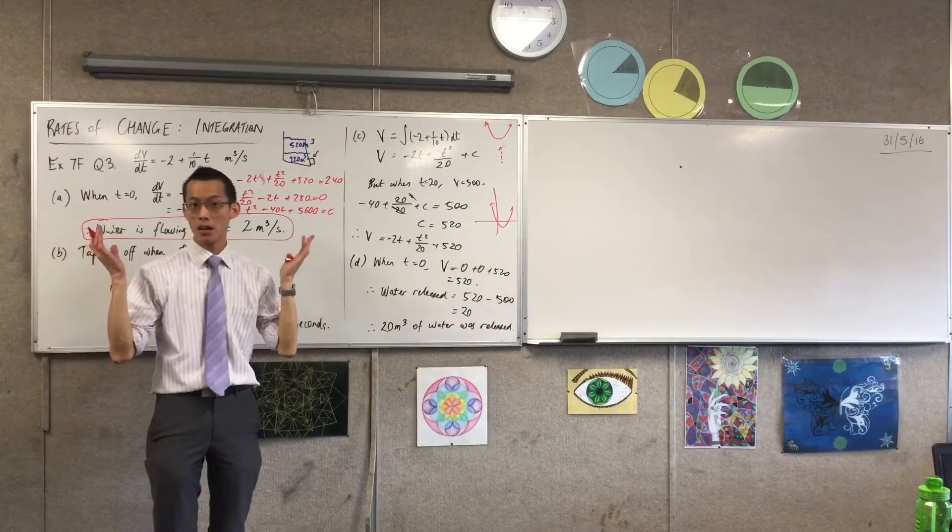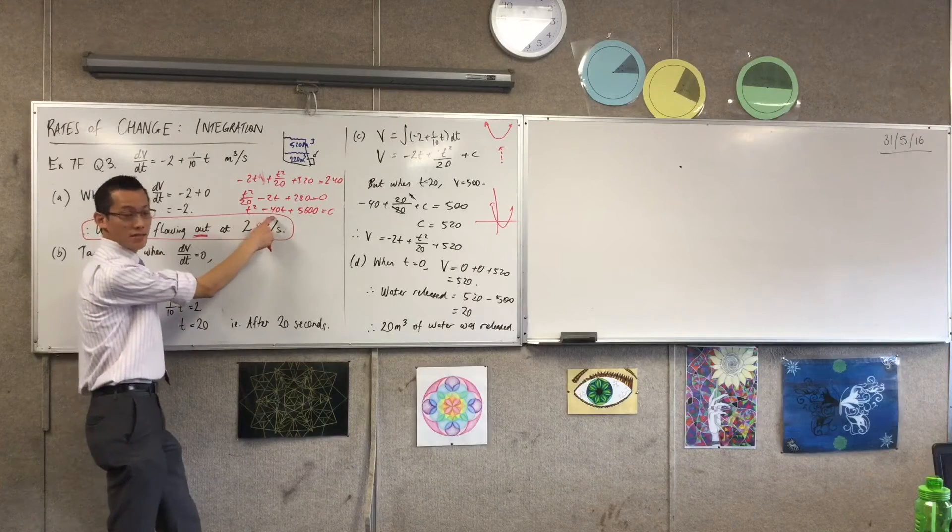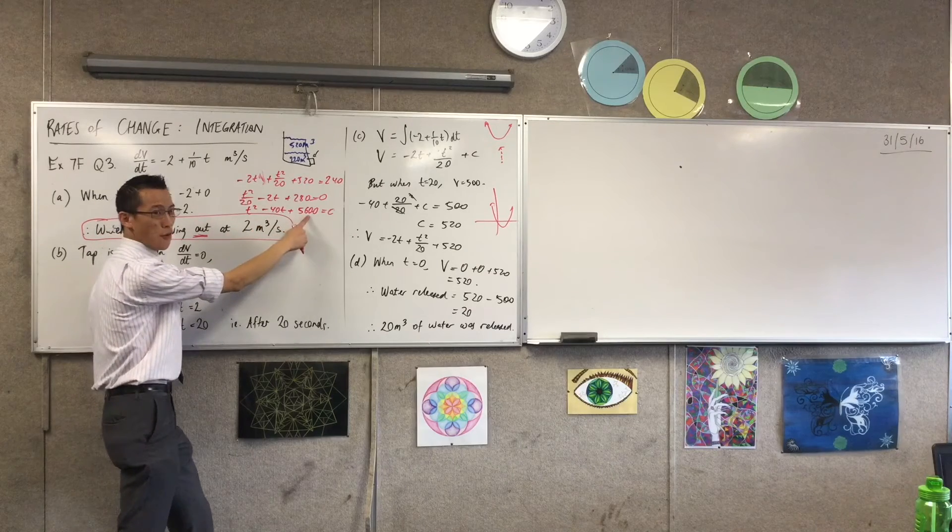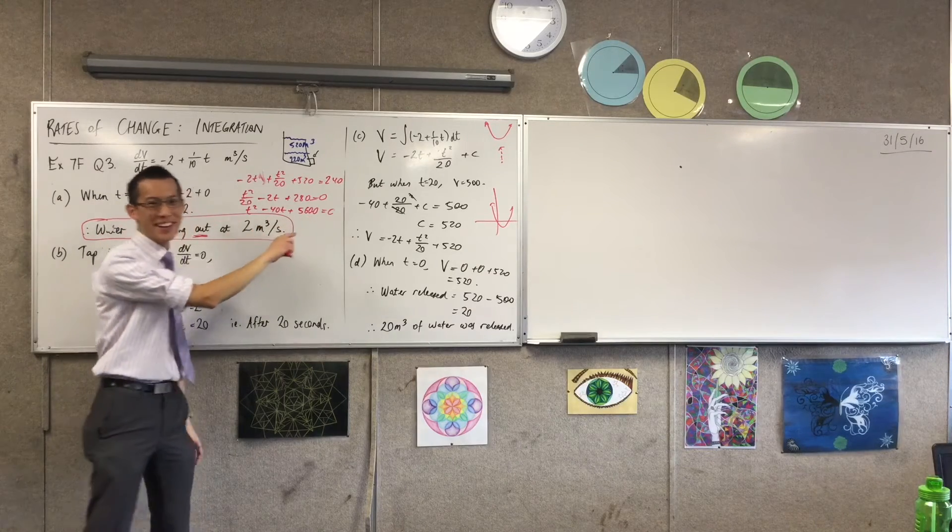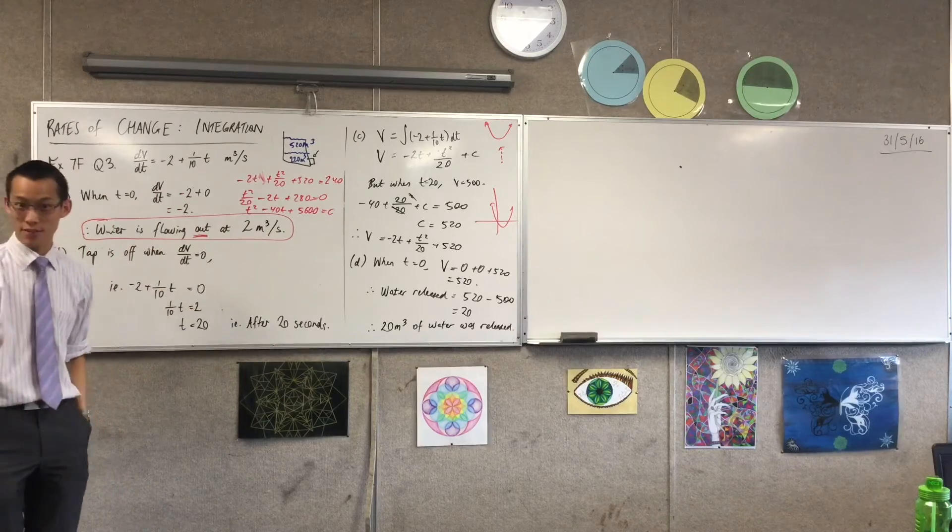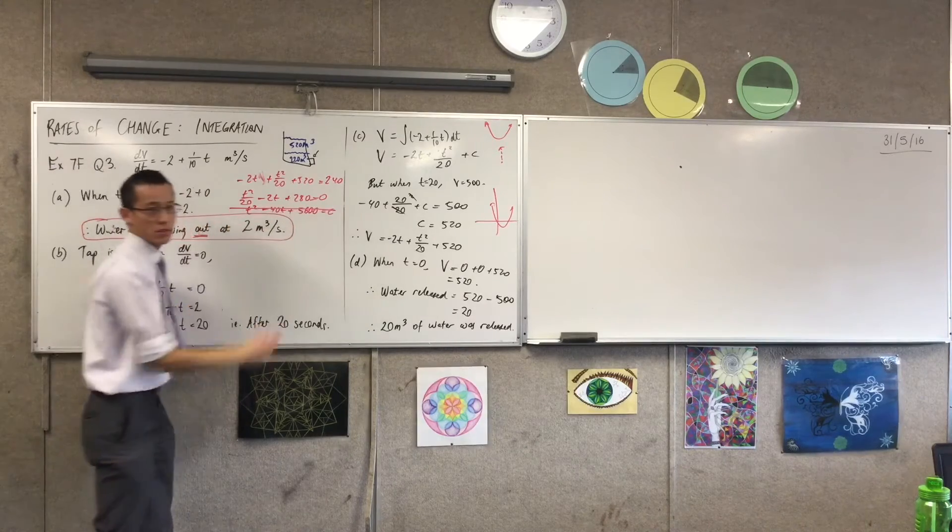I just think about the discriminant. So b² - 4ac, uh-oh, that's going to be so negative, it's not even funny. This has no solution, okay?